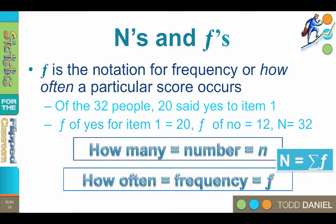You should use a lowercase f as a notation for frequency, or how often a particular score occurs in a data set. The symbol for frequency will always be written as lowercase f. We will never use frequency as an uppercase f.